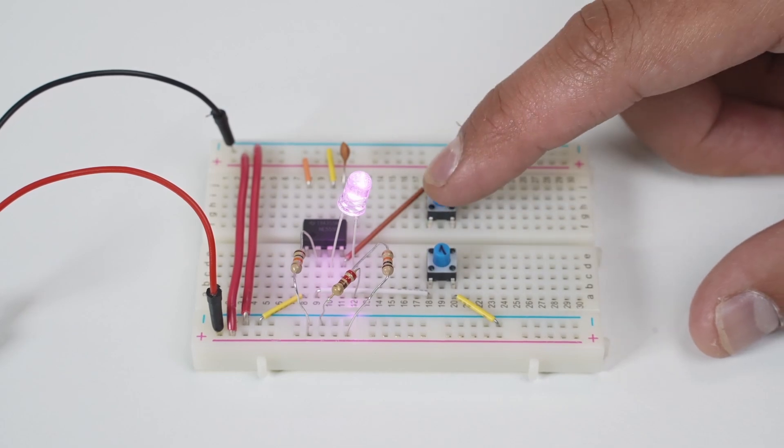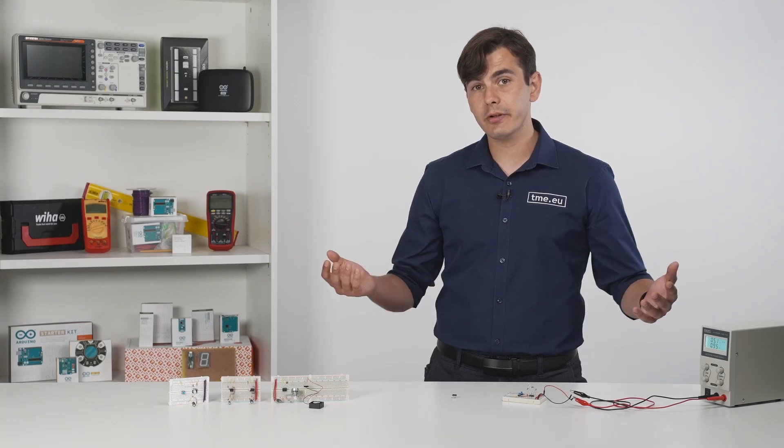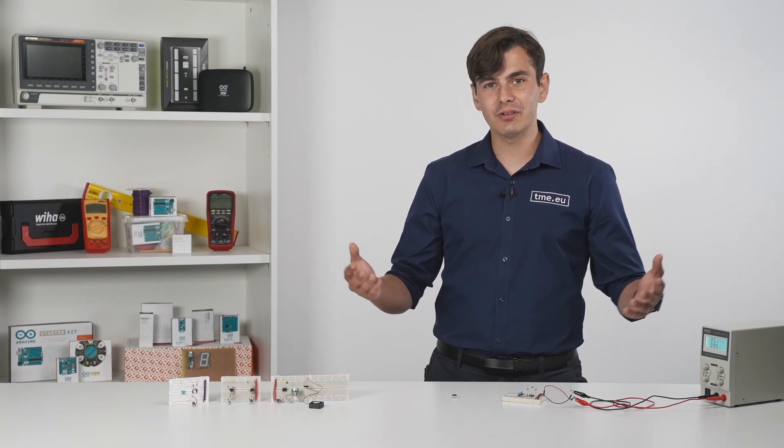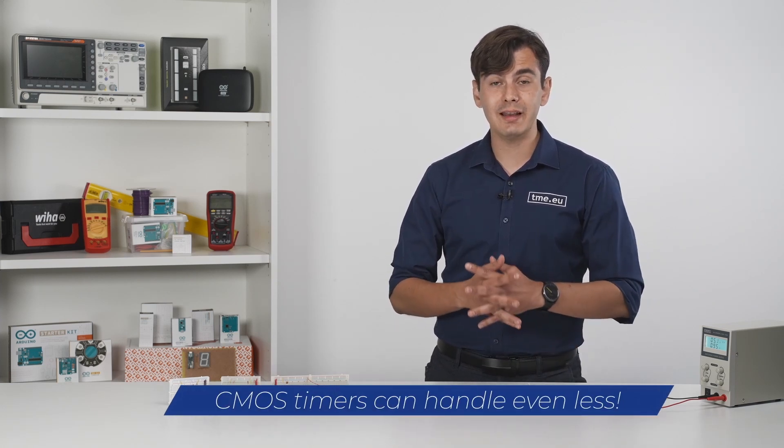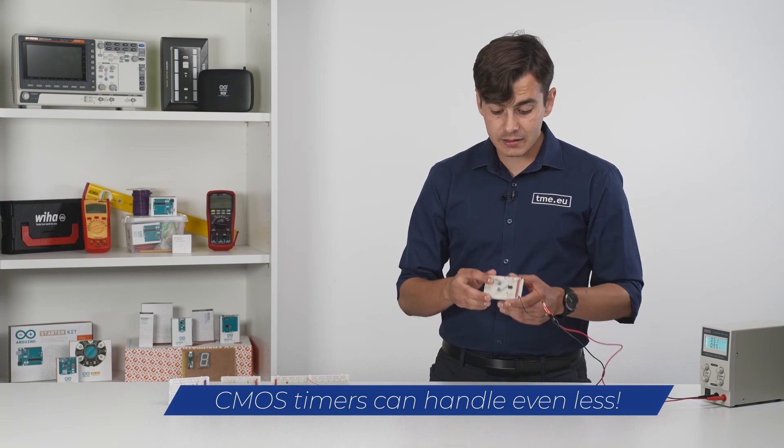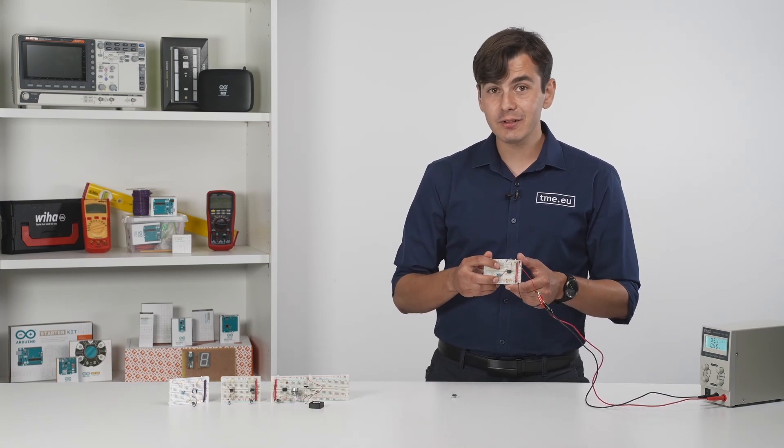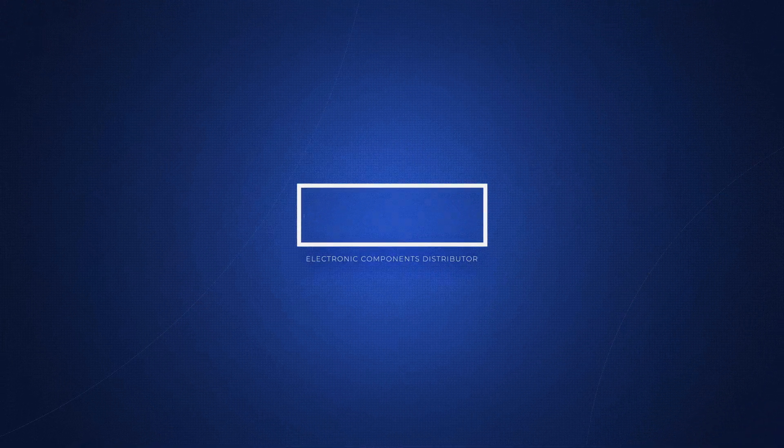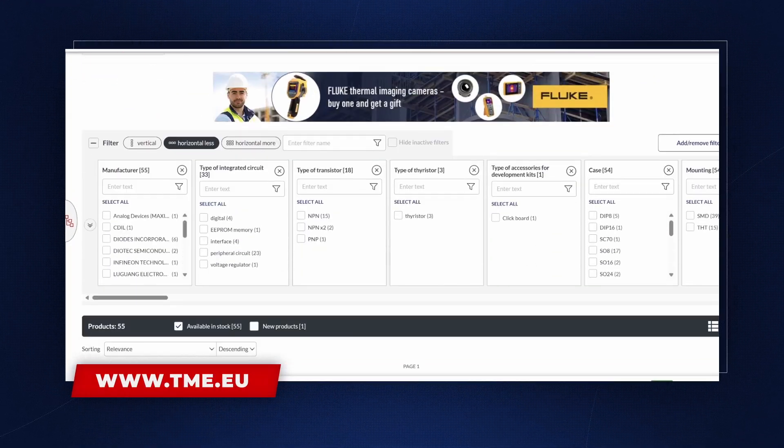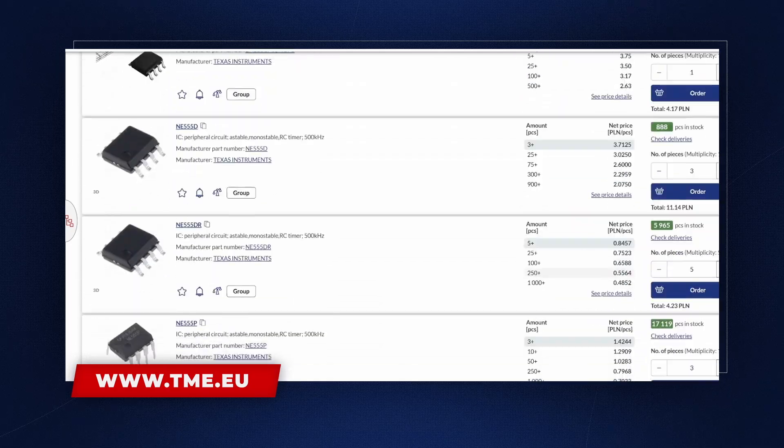Or you can control something much bigger, like a motor or something like that. But be careful, because it can handle up to 200 mA. By the way, can you see this shiny LED? Do you know where we get it from? From TME. This and much more, like about 700,000 products. Go to our website.